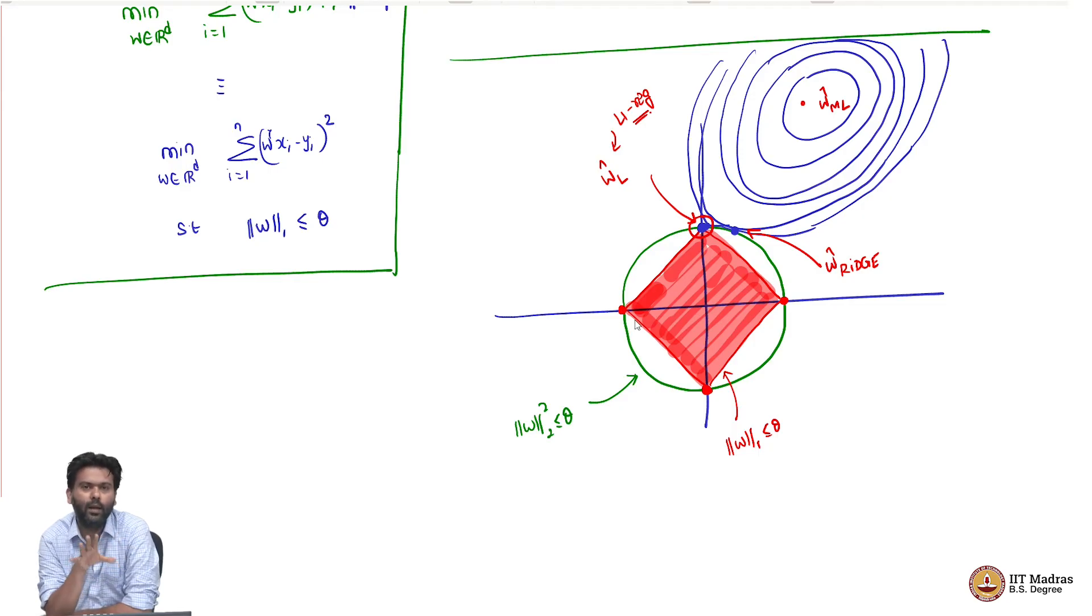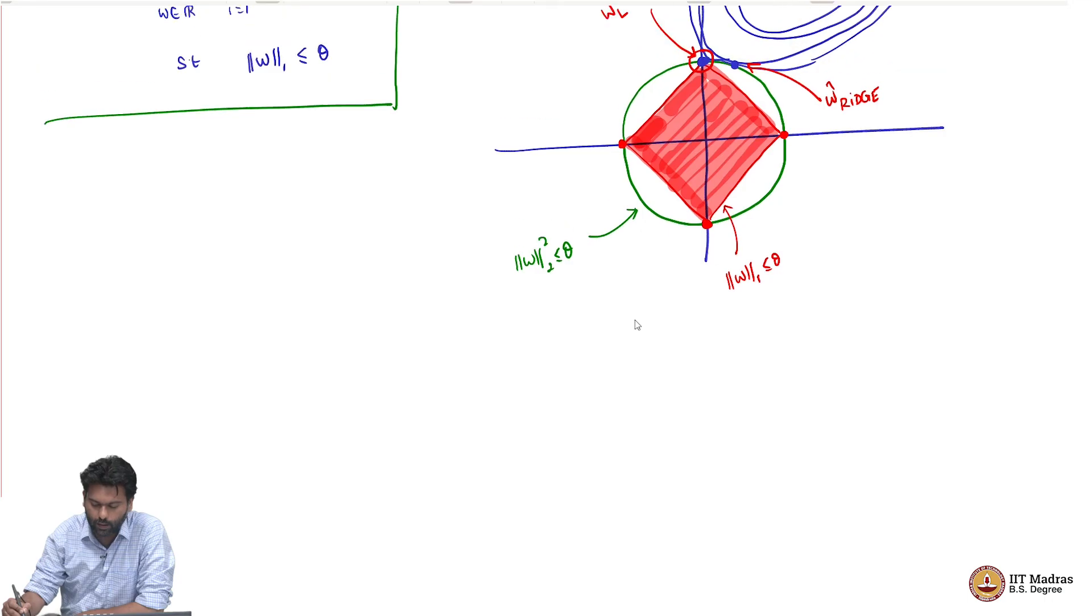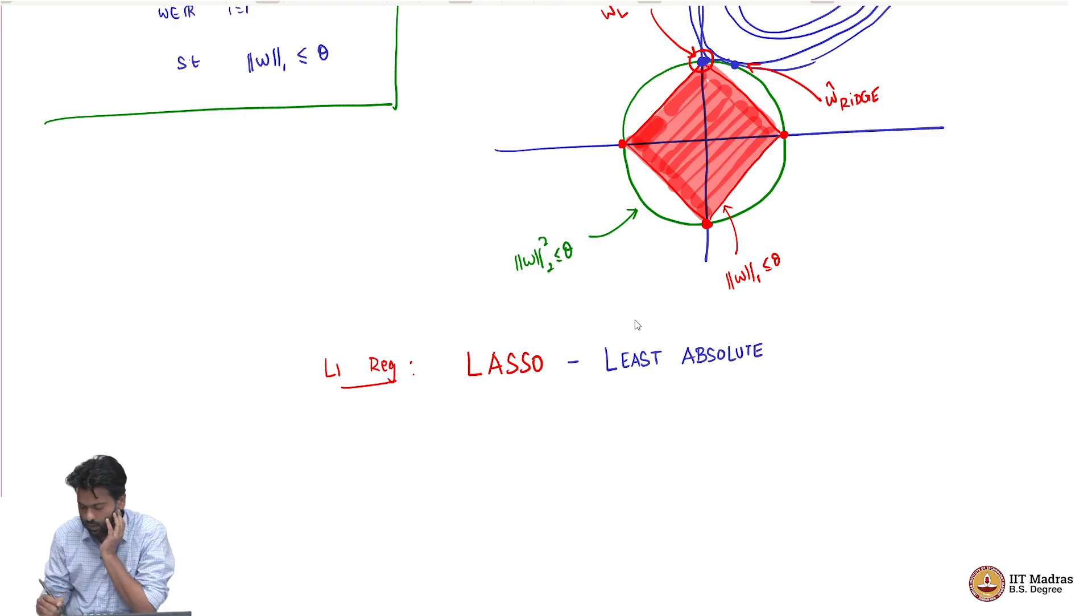For now, this would suffice to say that instead of the L2 regularizer, if you used an L1 penalty or a regularizer, then you perhaps will get more sparse solution. This way of doing linear regression is what is called as the L1 regularization. This name for this is what is called as LASSO. LASSO is an abbreviation, an acronym for least absolute shrinkage and selection operator.